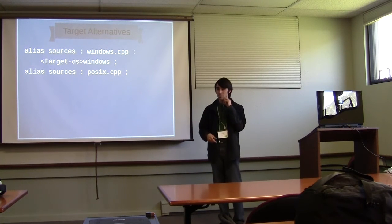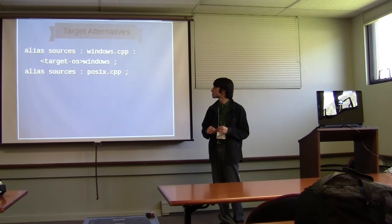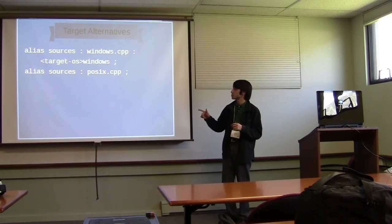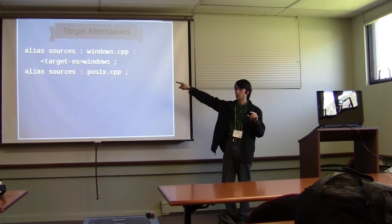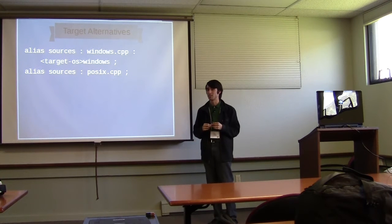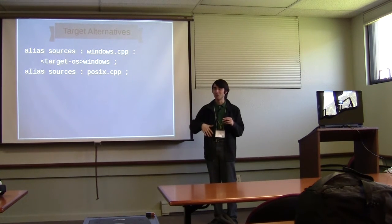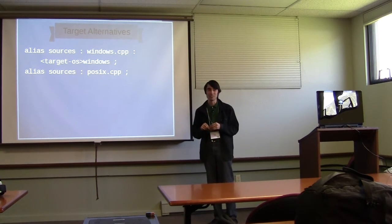What would happen if you put target-os=windows on a lib thing? If you have multiple alternatives, it chooses the best one regardless of target type. If you had two libs and one had target-os=windows, on Windows it would build the library with that target-os. However, this can get complicated — generally when using target alternatives I find it's almost always best to use aliases to control it, because the extra level of indirection makes things a lot easier.